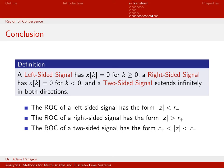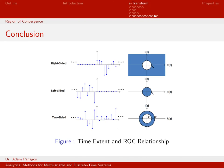For finite length signals it was almost trivial — the whole Z-plane except possibly the origin or infinity. For infinitely long signals, we have a slightly more complicated geometric structure.